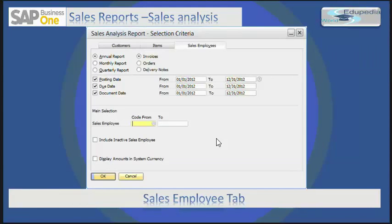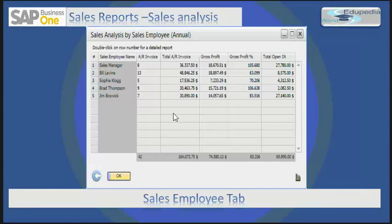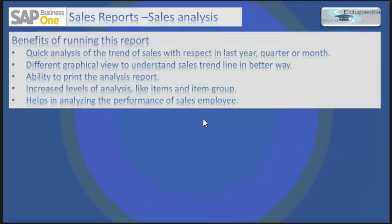Let's see the sales employee tab. When you run this report, you have different sales employees and the total AR invoices they have been involved in, the gross profit, and the amount of those sales invoices. Benefits of running this report include: quick analysis of the sales trend with respect to last year, quarter, or month; different graphical representations to view and understand the sales trend in a better way; ability to print the sales analysis report; and increased levels of analysis like items and item groups to help analyze the performance of sales employees.